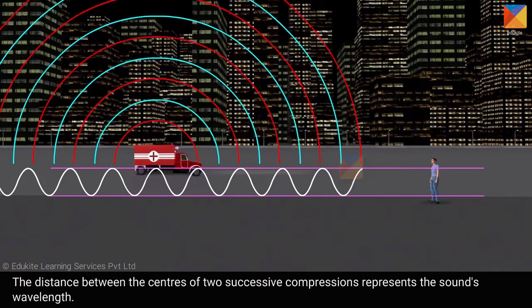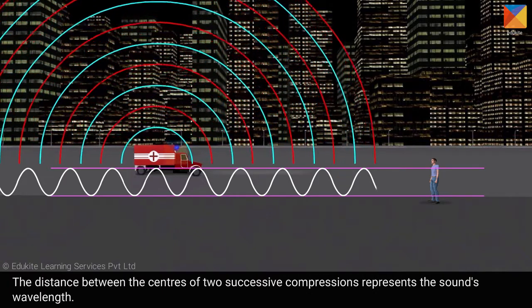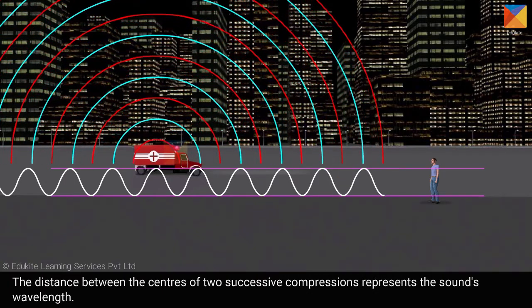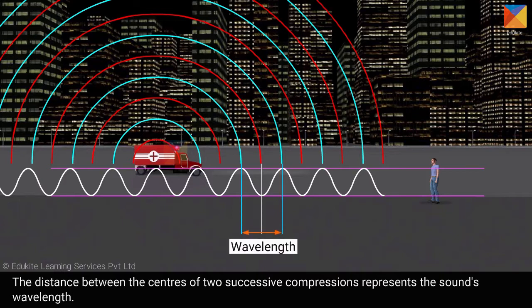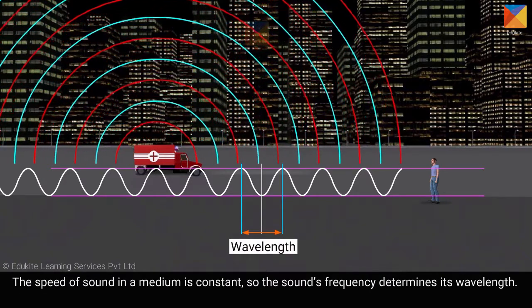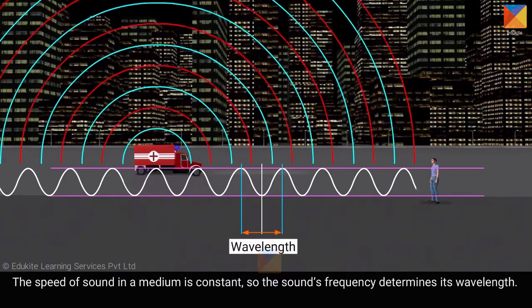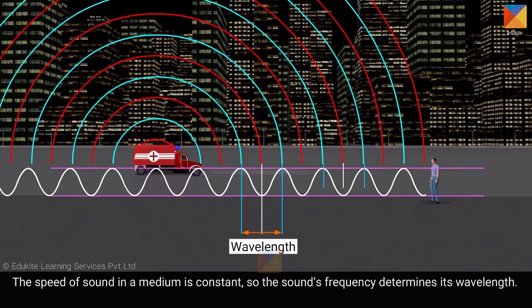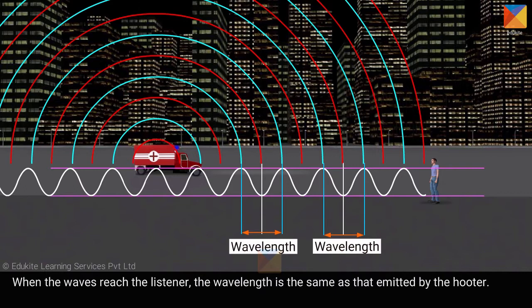The distance between the centres of two successive compressions represents the sound's wavelength. The speed of sound in a medium is constant, so the sound's frequency determines its wavelength. When the waves reach the listener, the wavelength is the same as that emitted by the hooter.